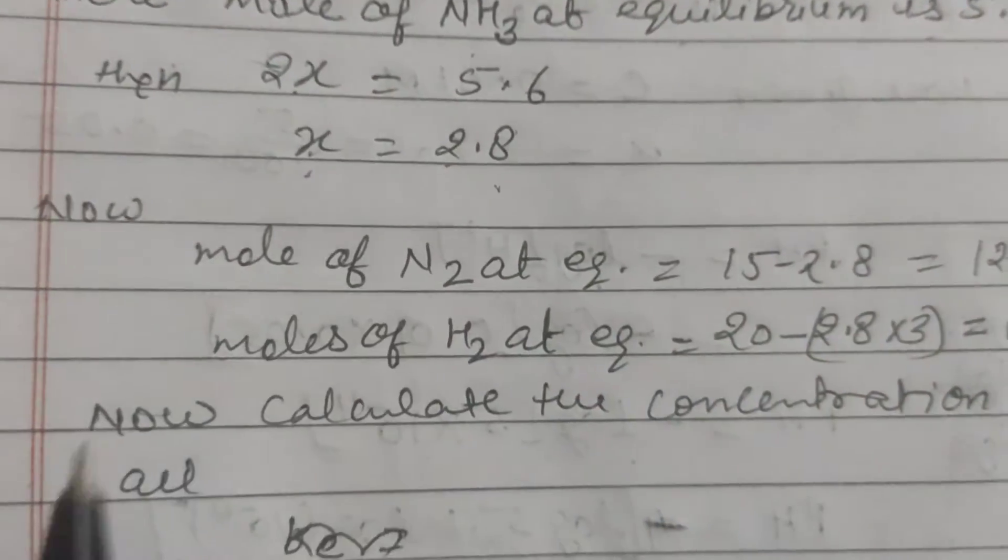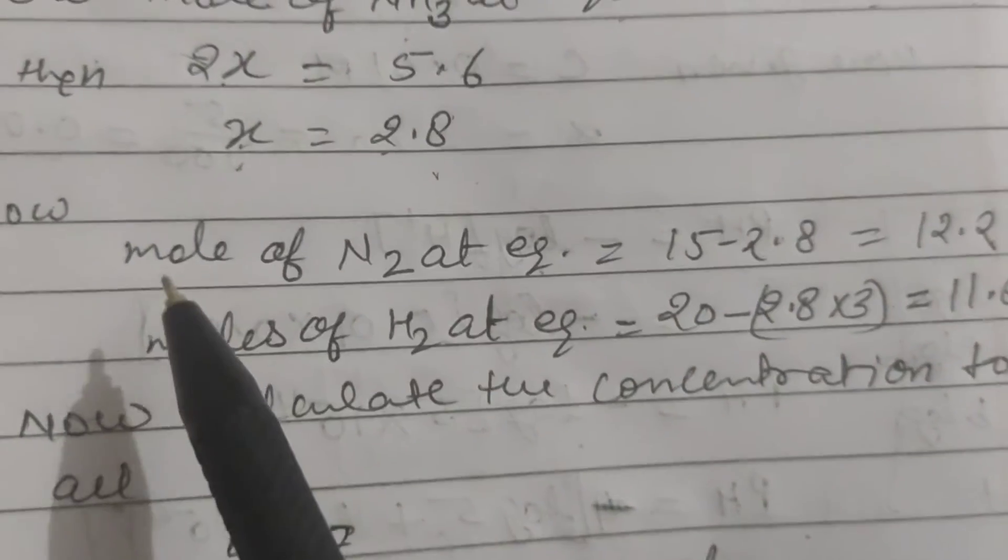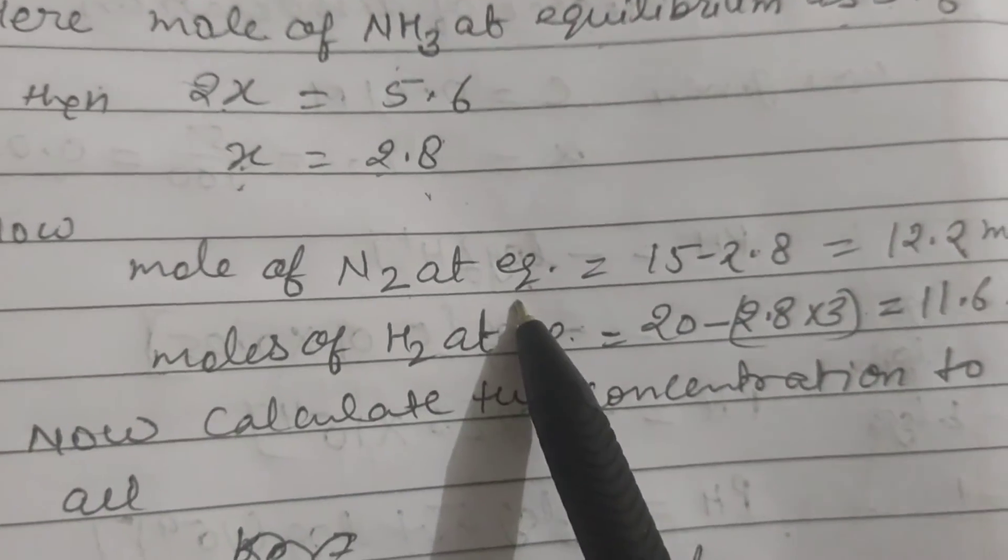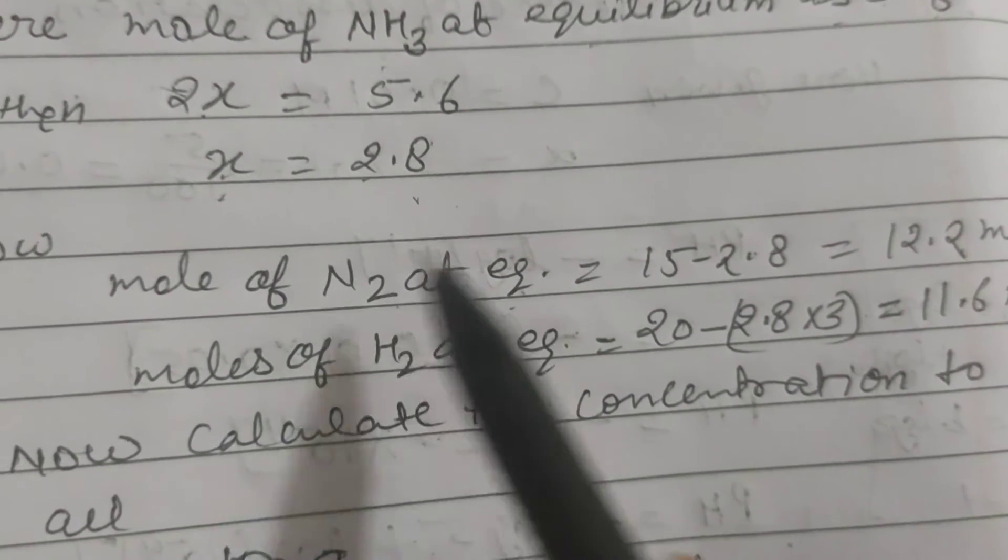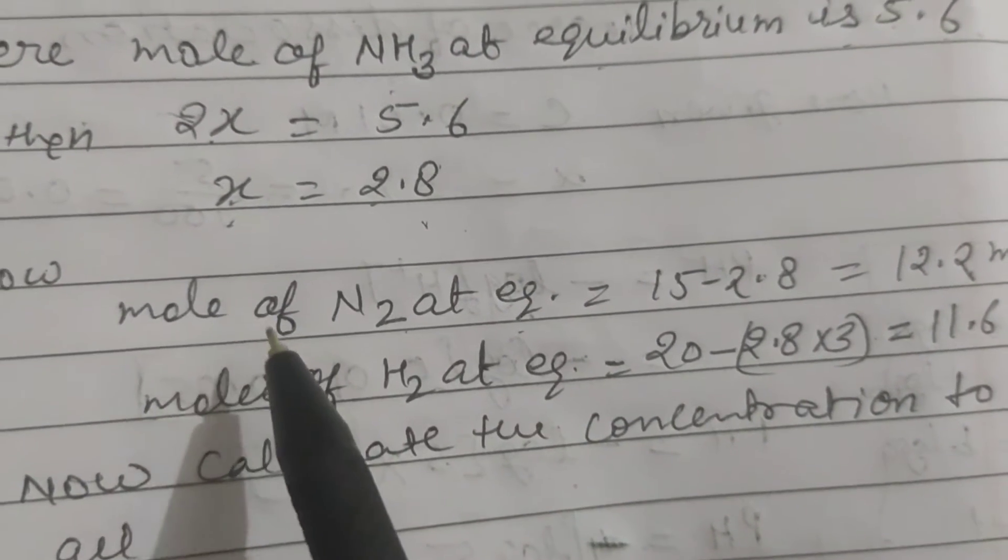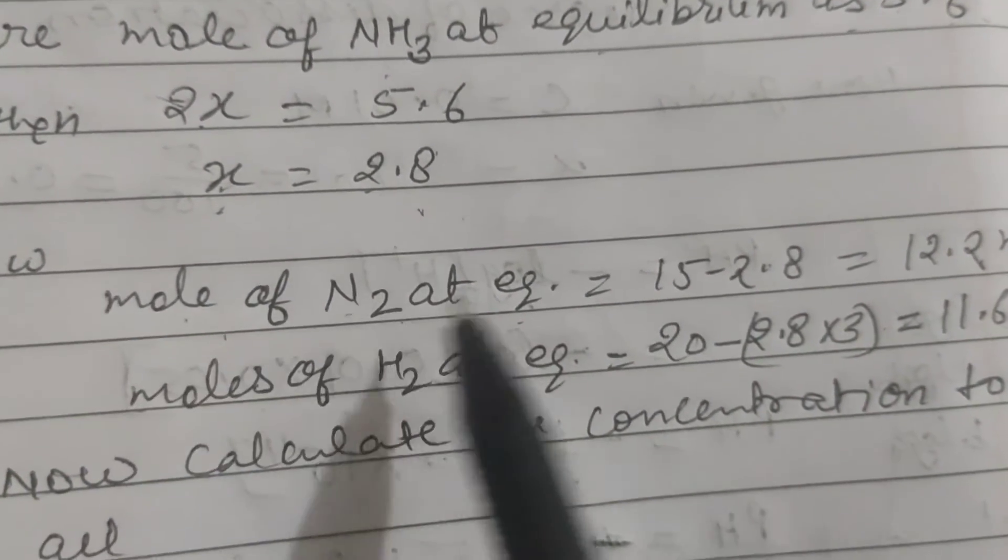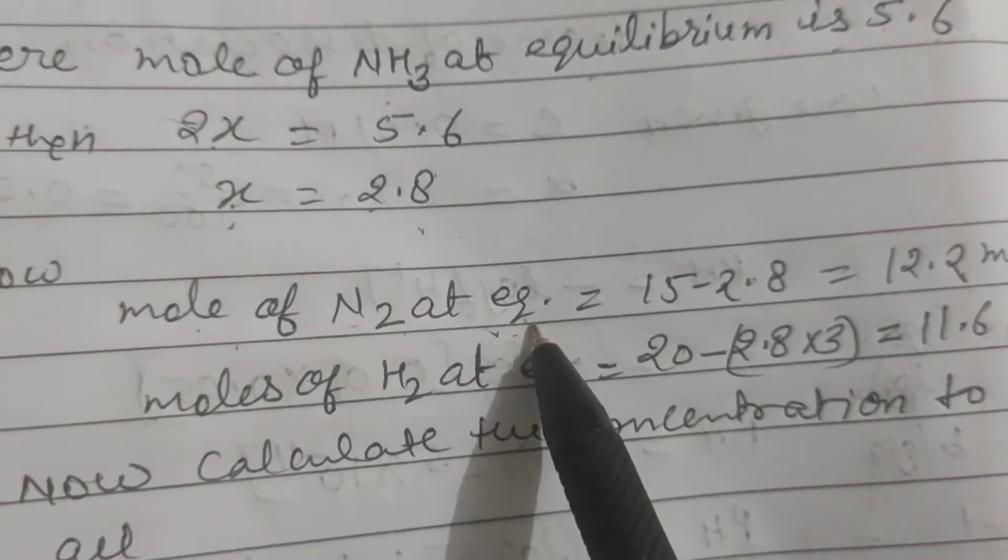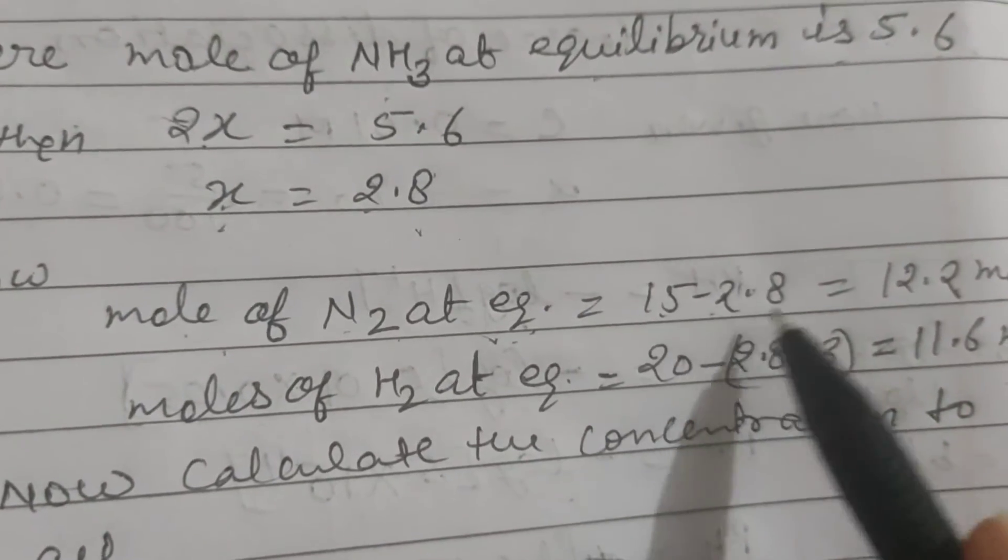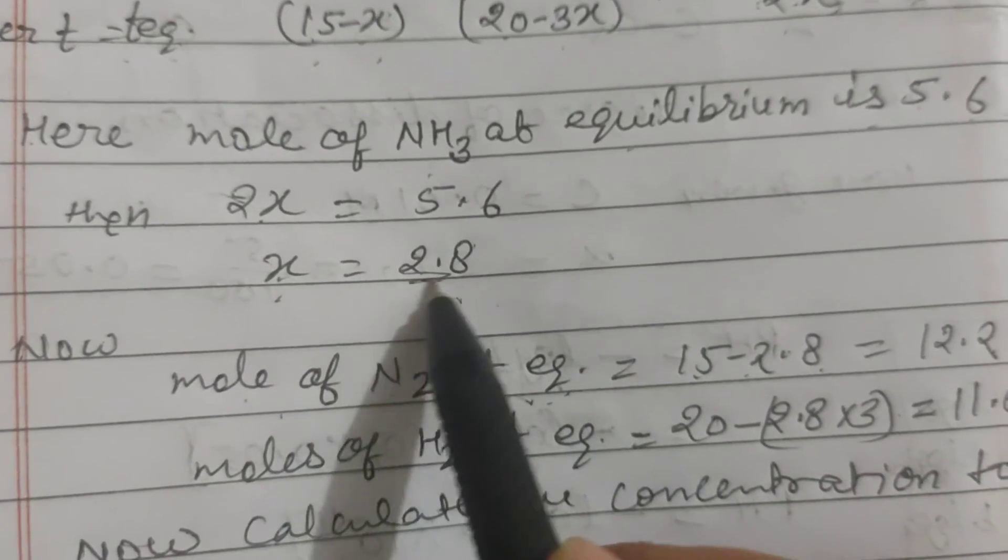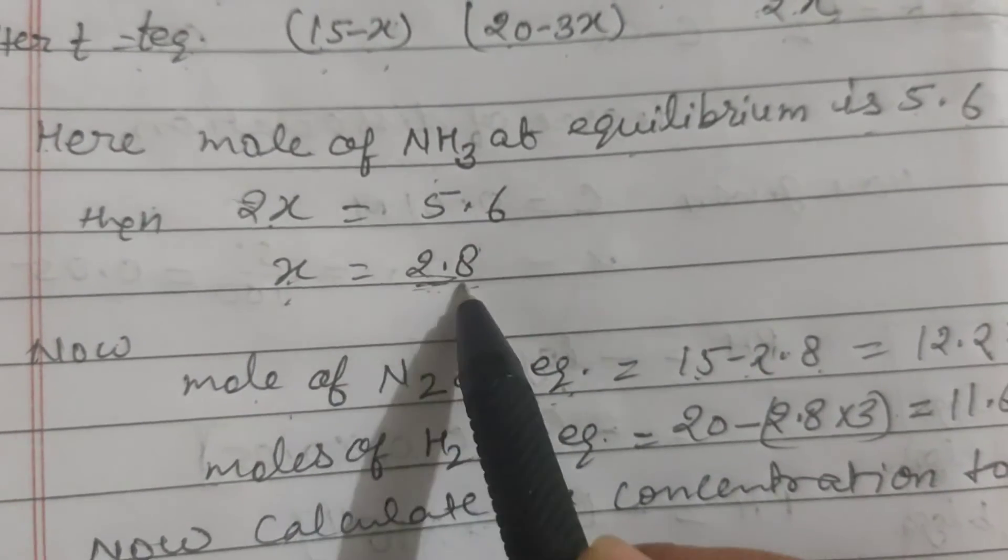Now we have to find the moles of N2, means moles of each and every constituent which is in the reaction. Moles of N2 at equilibrium will be 15 minus 2.8. We are finding the moles at equilibrium.